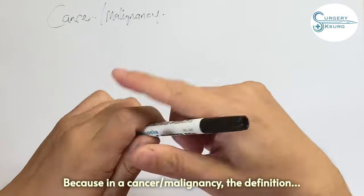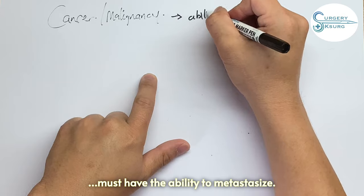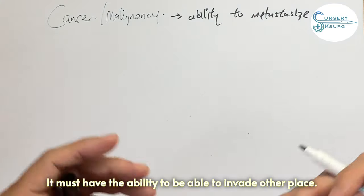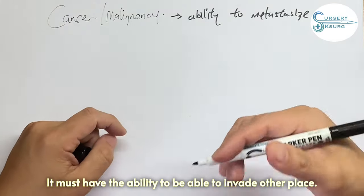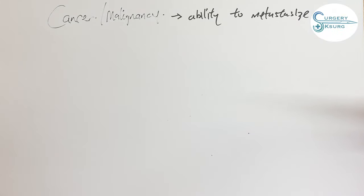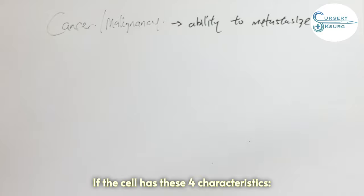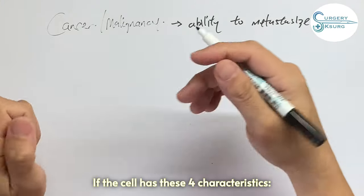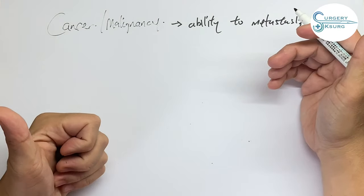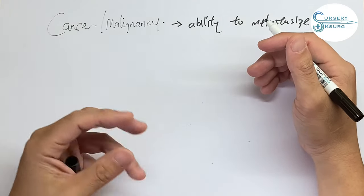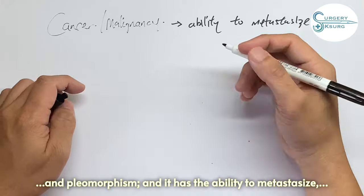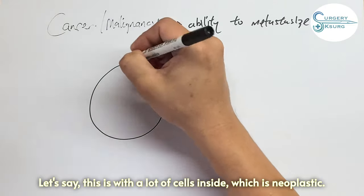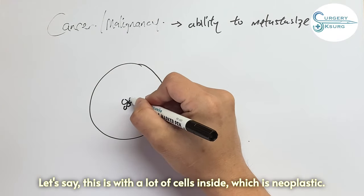A lot of my students are still confused that if you have these four characteristics, then it is a cancer. No, a cancer or malignancy, by definition, must have the ability to metastasis. It must be able to invade other places. So if the neoplastic cells have these four characteristics - hyperchromatism, increased NC ratio, increased mitotic figures, and pleomorphism - and it has the ability to metastasis, what does it mean?